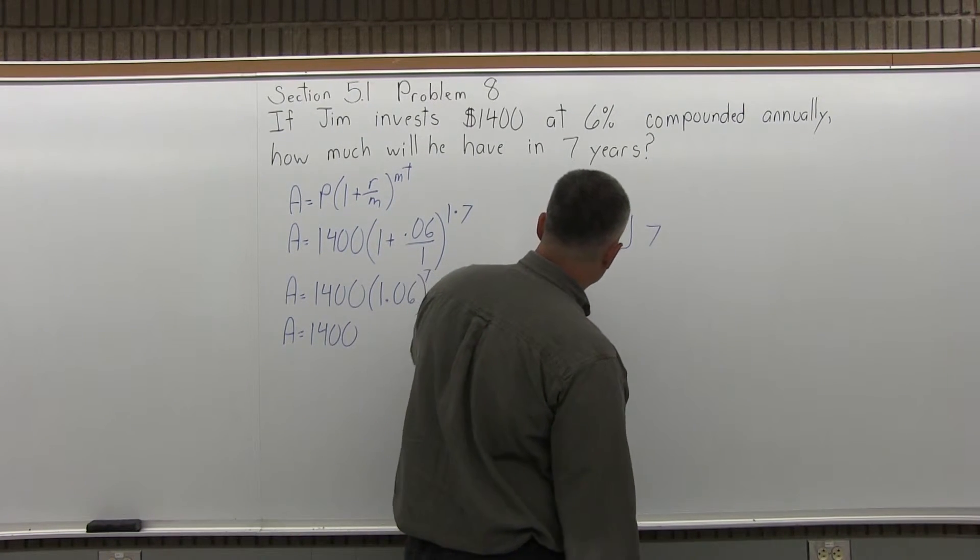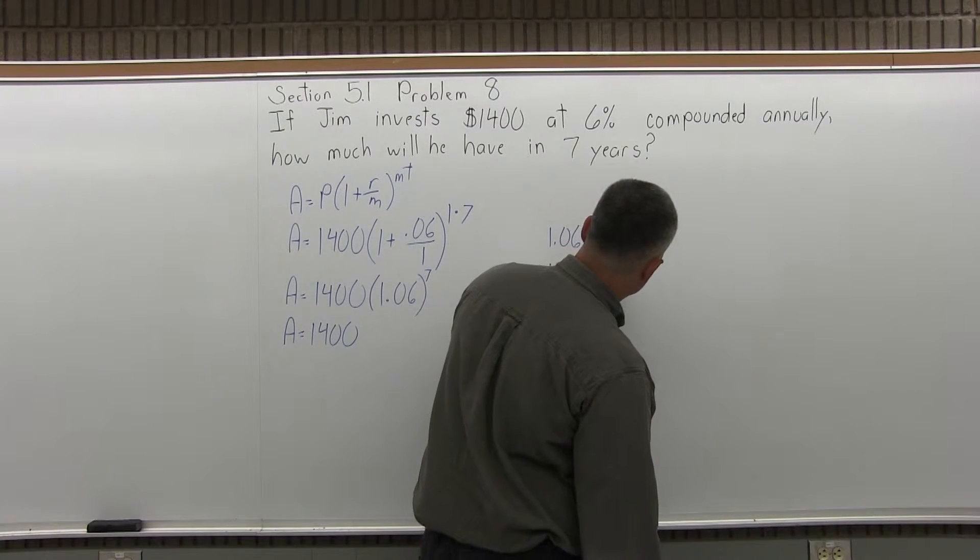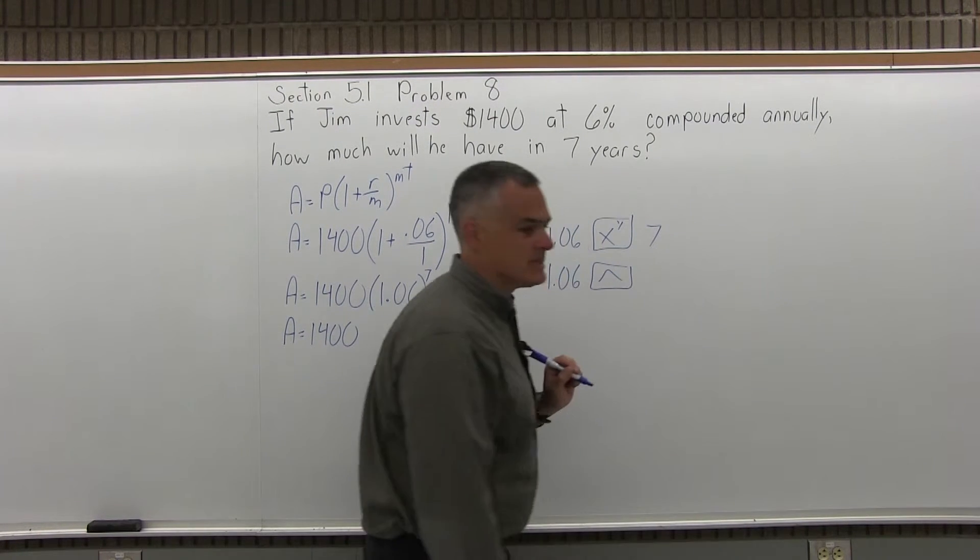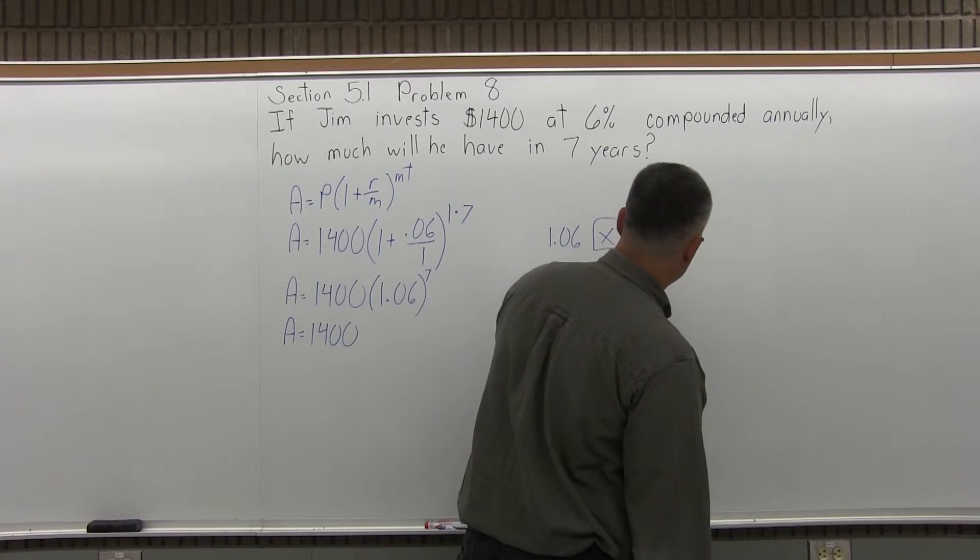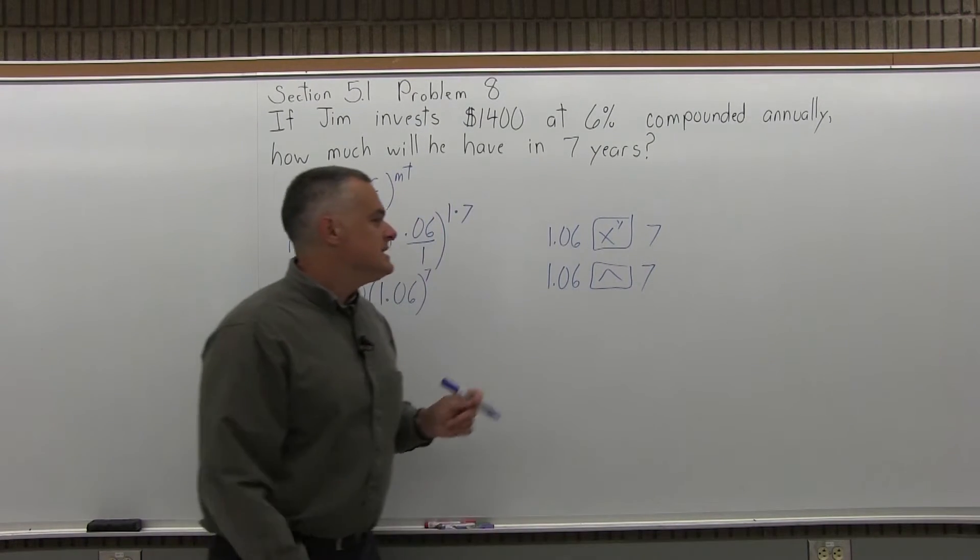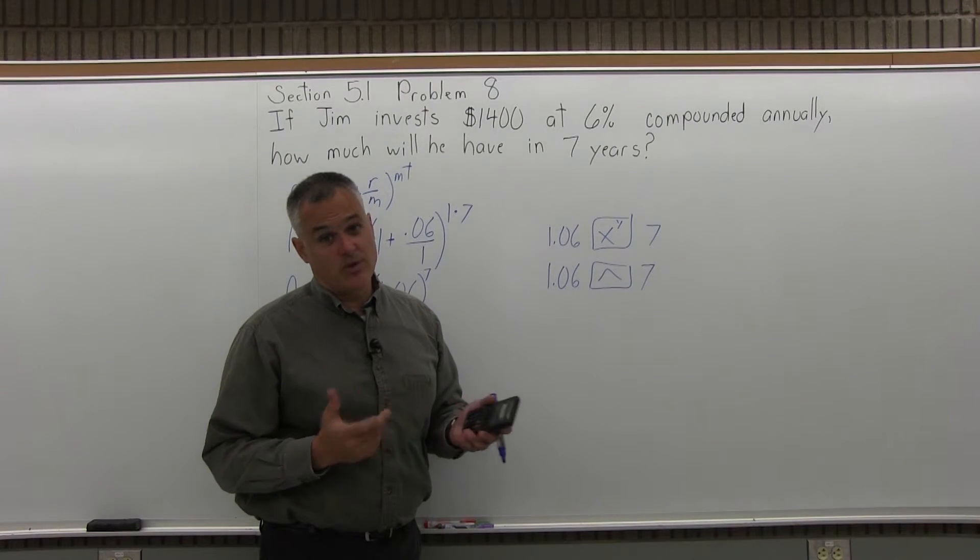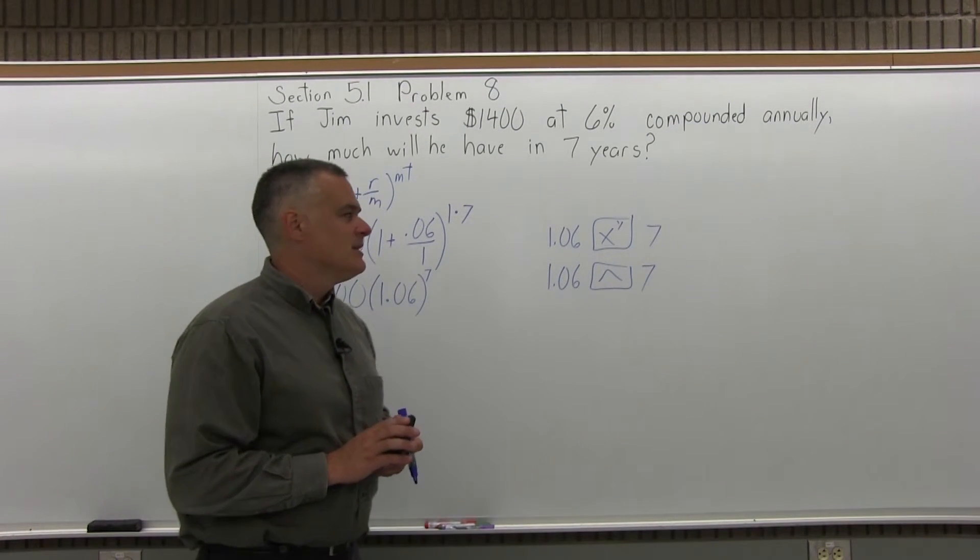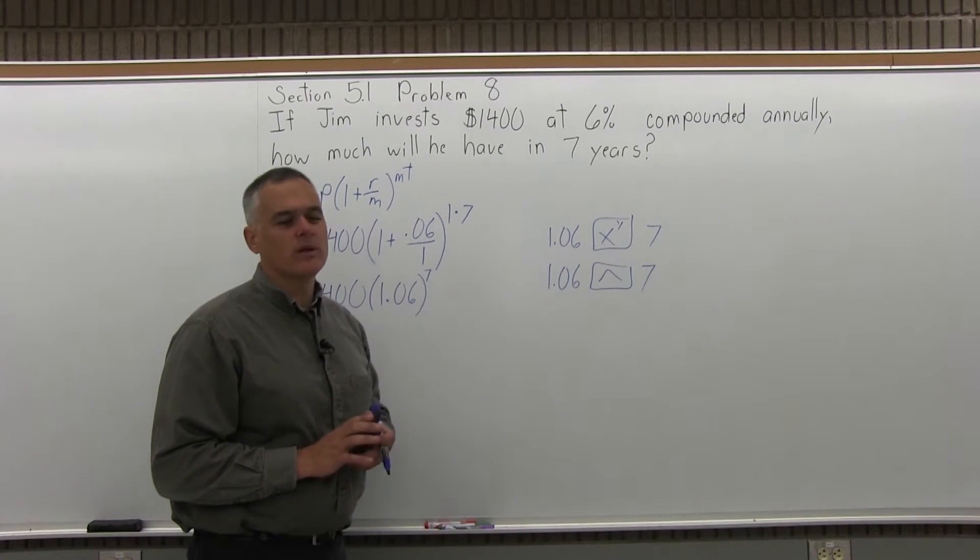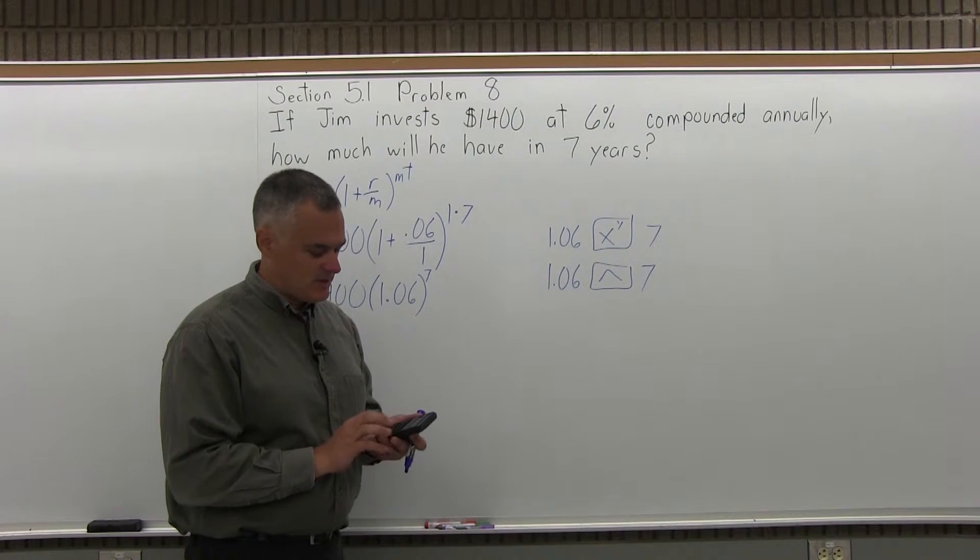On some calculators, it would be the base of 1.06, then the exponent button that looks like an arrow pointing up, called a caret, and then you enter the exponent. This exponent is small enough that if you have a basic function calculator, you could enter the 1.06 seven times, but that would be more work than it's worth. I'm going to use the exponent button.